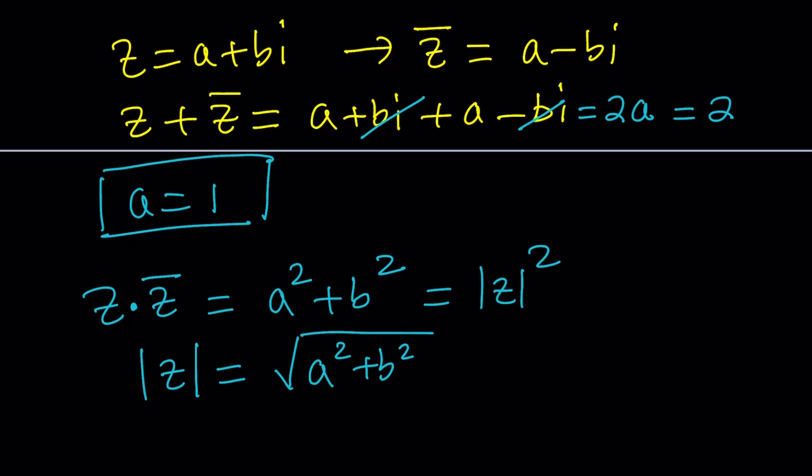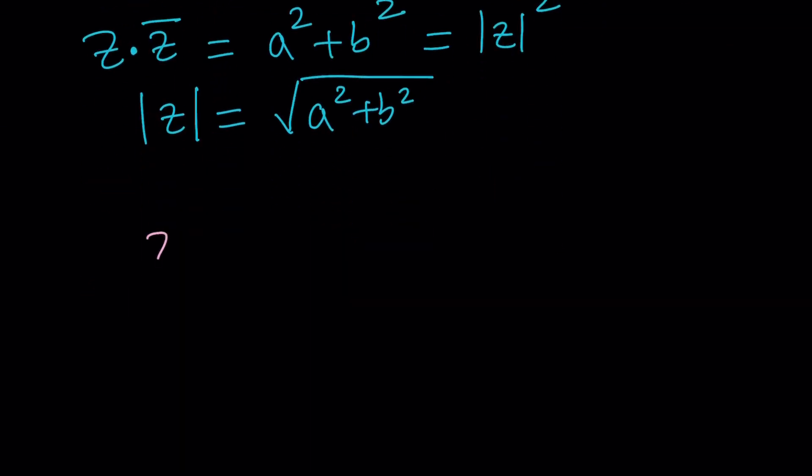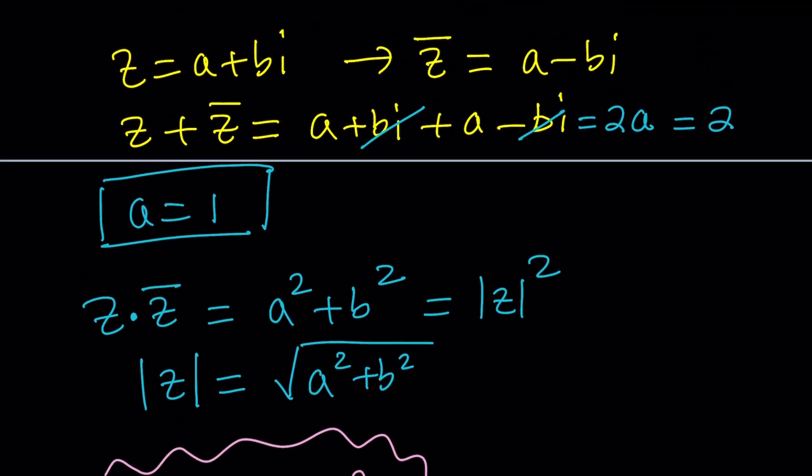In other words, z times z bar is absolute value of z squared. So that should be known as an identity. Let it be known as a very important identity, which is going to help us solve this problem. How do we use this information?